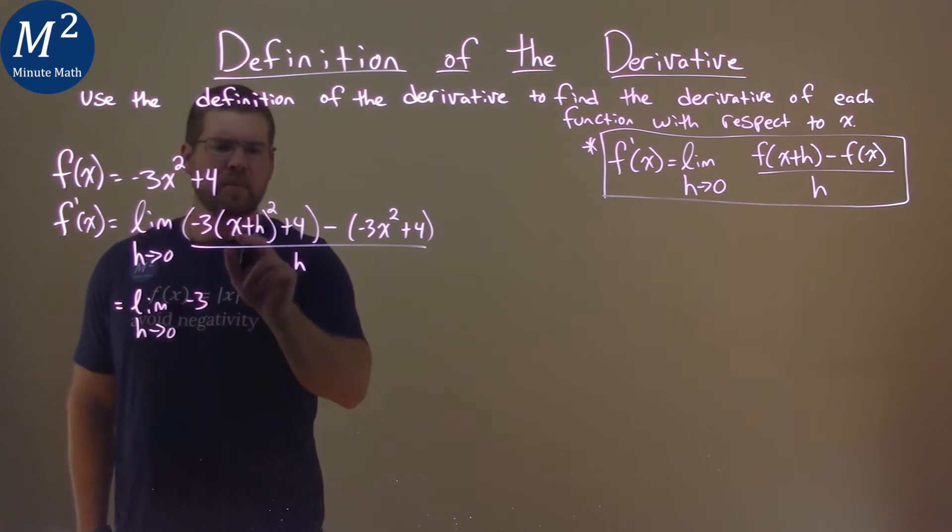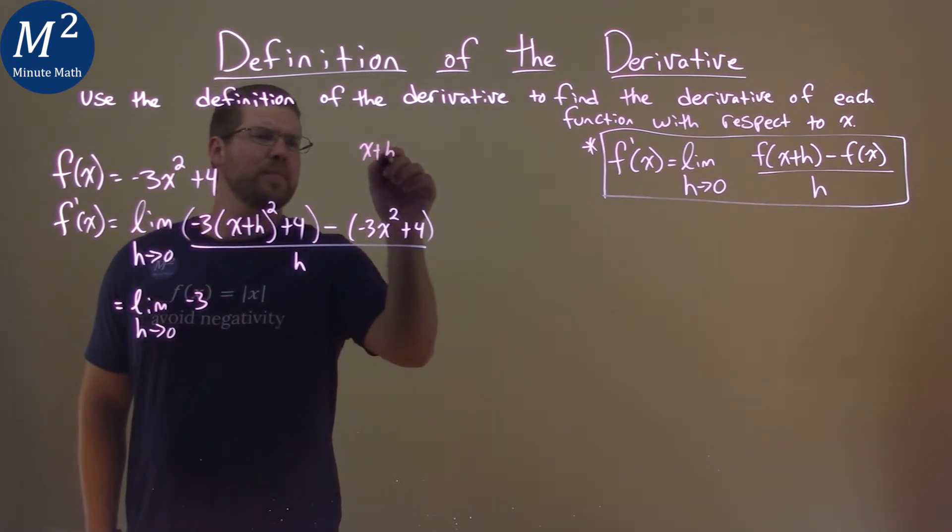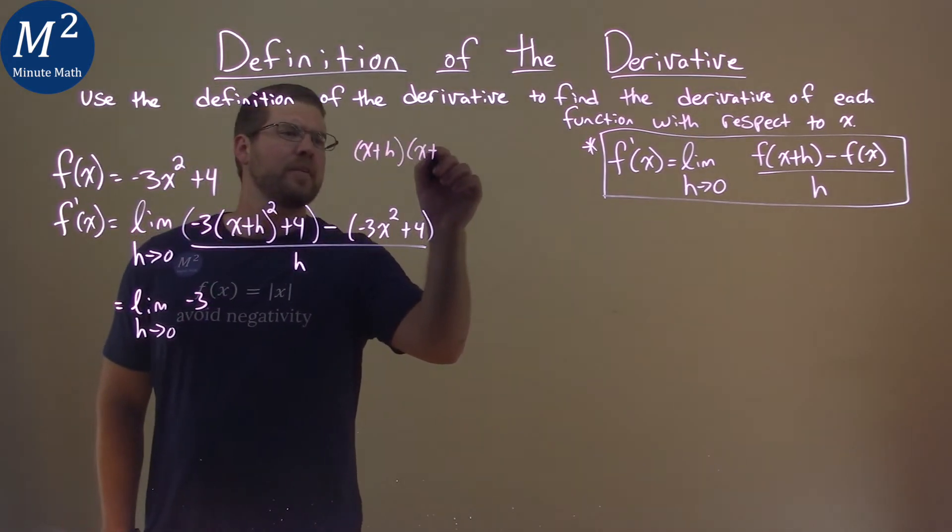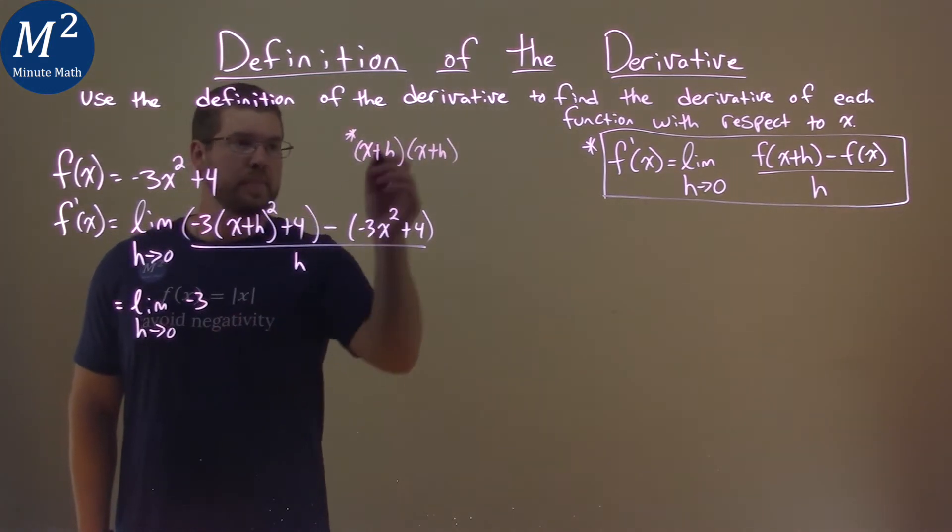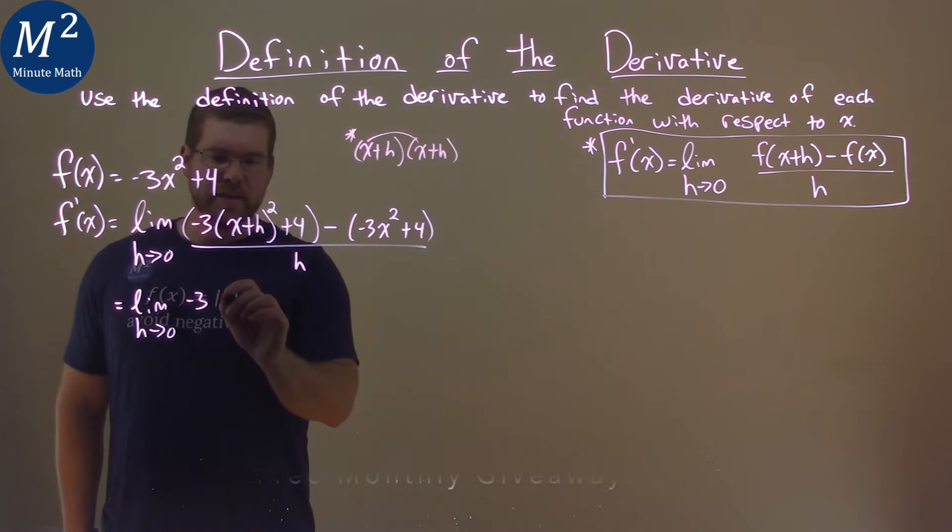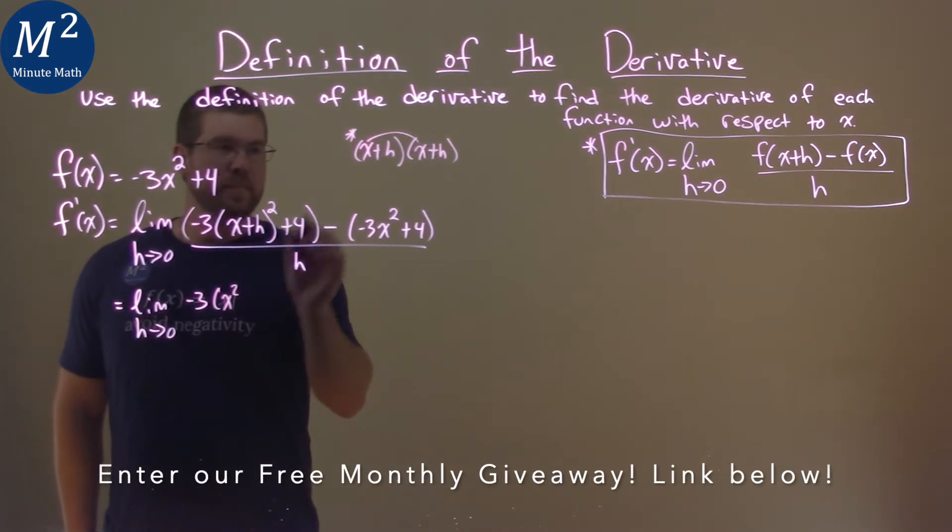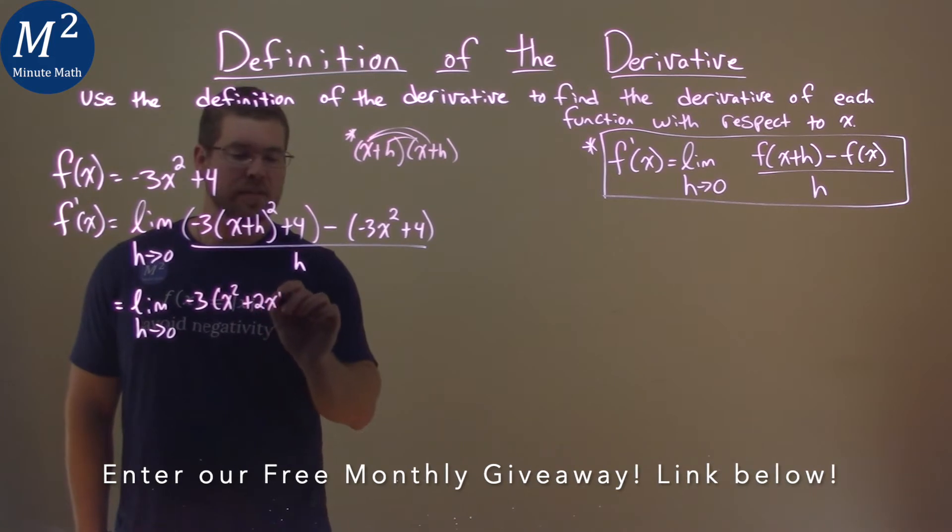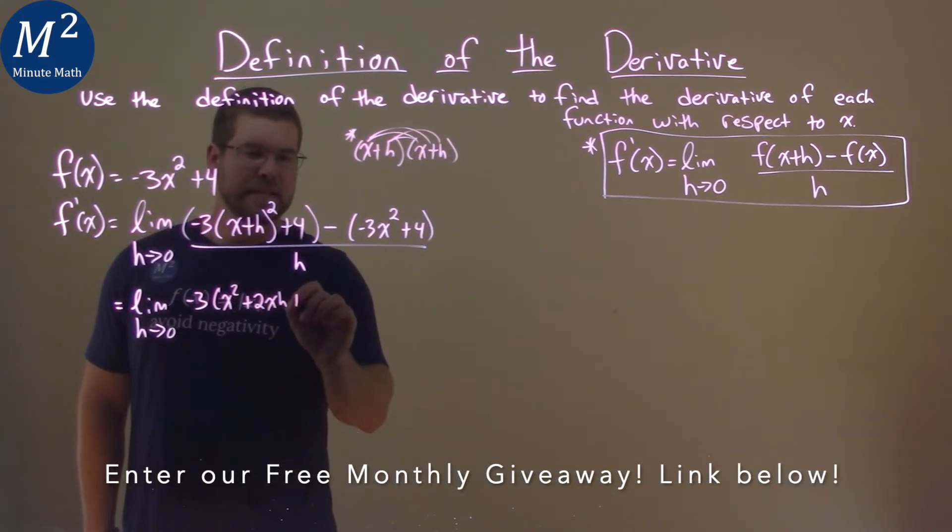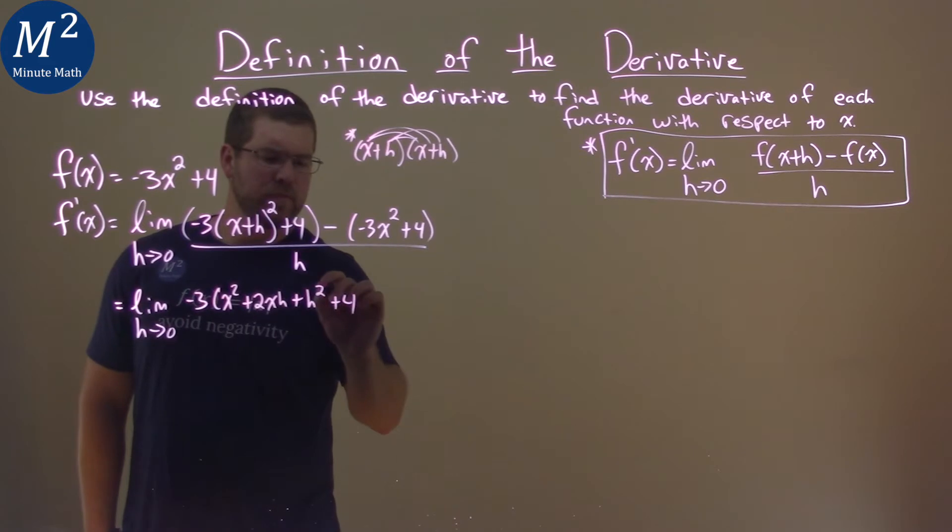Our negative 3 stays here, but remember that x plus h squared is a binomial that you need. This might help you. All right, it's x plus h times x plus h. x times x is our x squared. x times h, and then h times x is 2xh, and h times h is h squared. And we still have the plus 4.